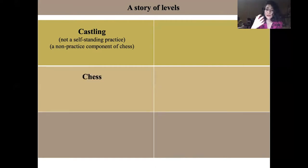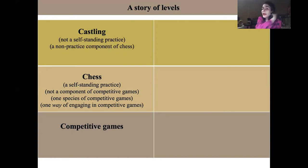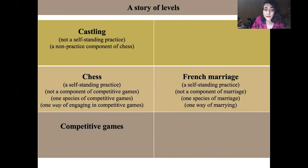Now take chess itself. Chess itself is a self-standing practice. Chess is not a component of competitive games — it is one species of competitive games, one way of engaging in competitive games. Analogously, take French marriage. French marriage is also a self-standing practice. French marriage is not a component of marriage; it is one species of marriage, one form of marriage.